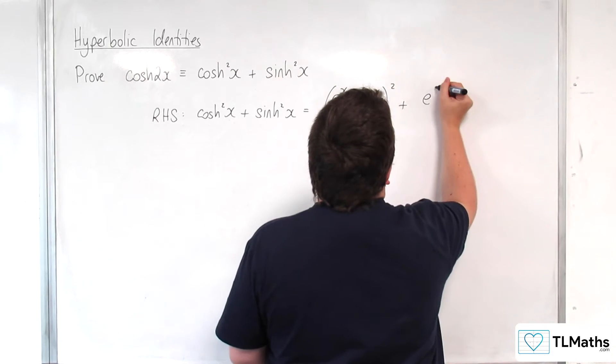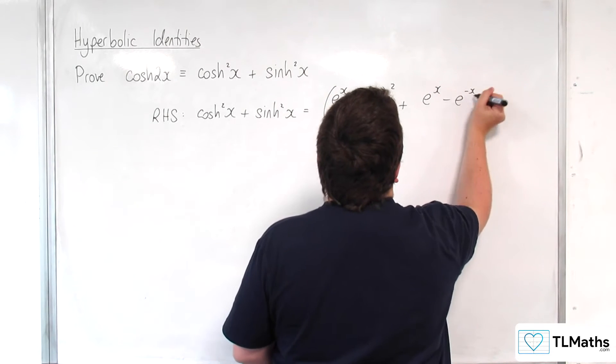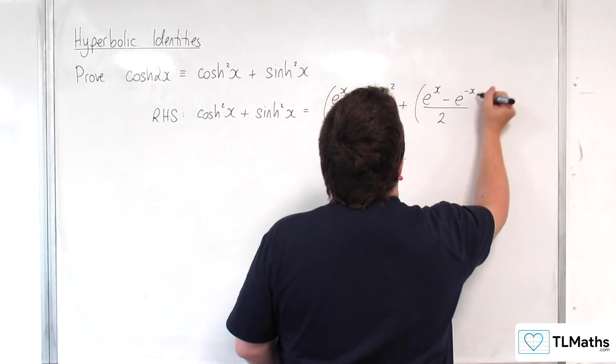And here we've got e to the x take away e to the minus x over 2, and we're squaring that.